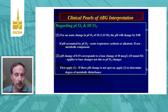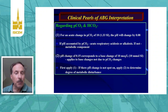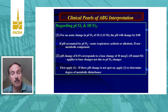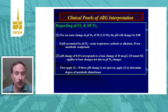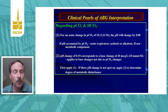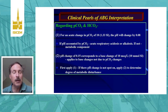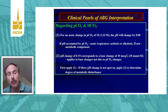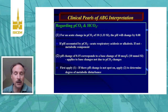If the pH change is not accounted for by PCO2, then we have a metabolic component. A pH change of 0.15 corresponds to a base change of 10 milliequivalents per liter, and that applies to base changes not due to PCO2. So first, when interpreting a blood gas, apply rule number one: look at the pH, look at the PCO2, and see if those match up — either they're normal or they represent a primary respiratory alkalosis or acidosis. If they don't match up, then you apply rule two to see whether you're dealing with a base excess or deficit.